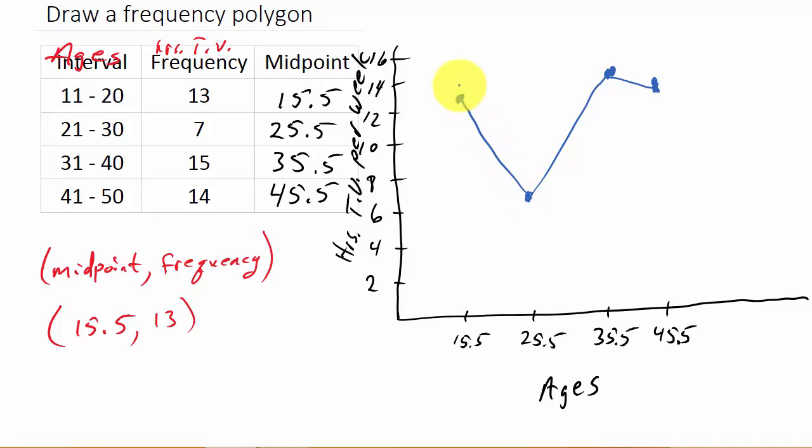Now, whenever we do a frequency polygon, so we have all of our points plotted and we have them connected with lines. And for the x, you have to use the midpoint, and then the frequency gives us the height on the y-axis.